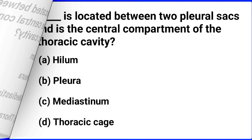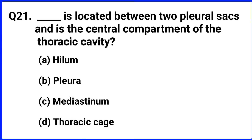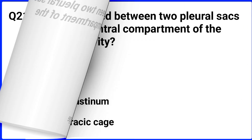Question number twenty-one. What is located between two pleural sacs and is the central compartment of the thoracic cavity? The options are hilum, pleura, mediastinum, and thoracic cage. The right answer is option C.